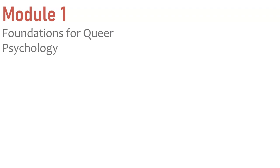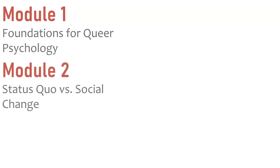I split the course into five modules. Module one was foundations: common language, going through the acronym, what does it mean to be stealth or perceived as passing, and theoretical foundations — what is queer psychology, queer theory, intersectional theory. Module two focused on the status quo: what do we want to resist, what's mainstream, what's considered normal, and how have people — queer and trans activists, and psychologists — been engaging in action to change that?